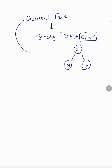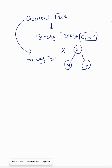A general tree does not follow the two-children rule. We usually refer to it as an m-way tree, meaning it can have more than two children — three, four, five, six, any number of children. That is called a general tree.